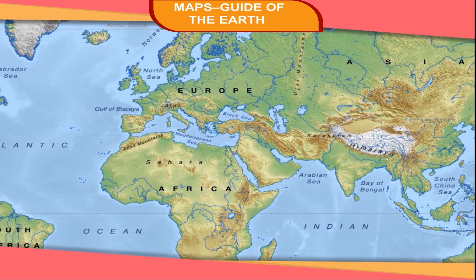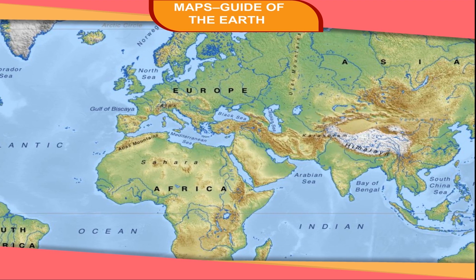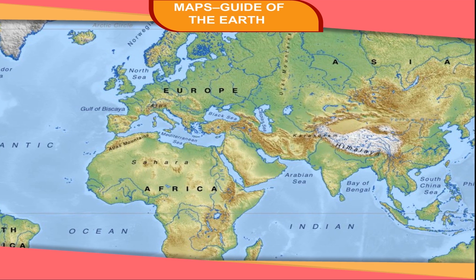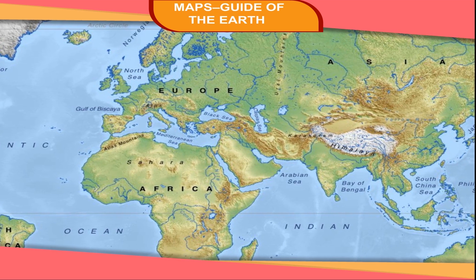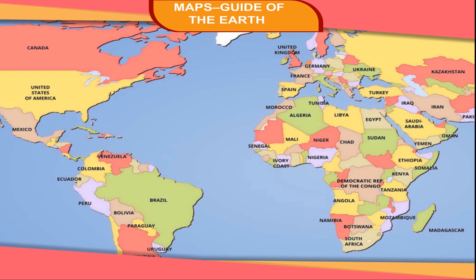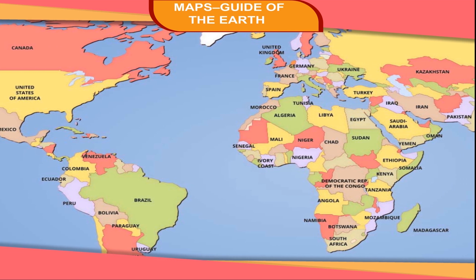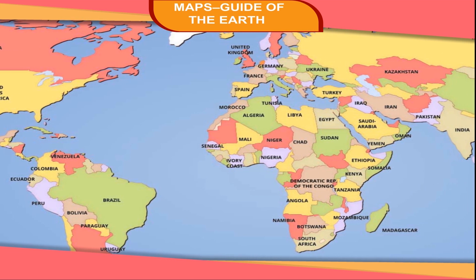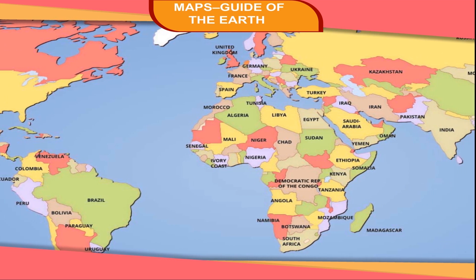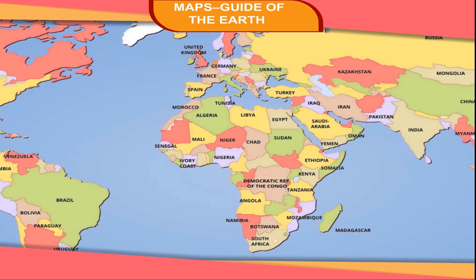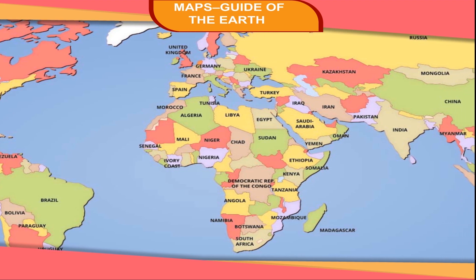Physical maps show physical features of continents, plateaus, plains, rivers, lakes, oceans, etc. Political maps show the boundaries of different countries, states, capitals, major cities, etc.